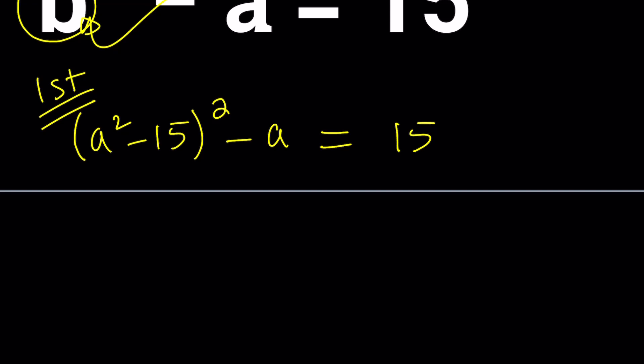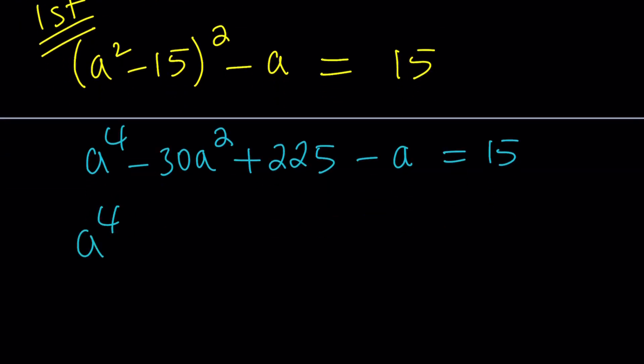Just be prepared. We're going to square this a to the fourth minus 30 a squared. Remember the formula? Plus 225 minus a equals 15. And if you put everything on the same side and write this in standard form, you're going to get something like a to the fourth minus 30a squared minus a plus 210 equals 0.